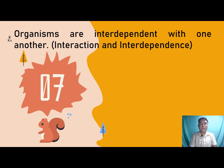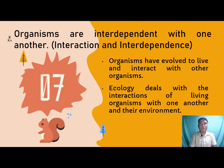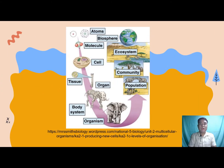The seventh unifying theme is interaction and interdependence — organisms are interdependent with one another. Organisms have evolved to live and interact with other organisms. Ecology deals with interactions of living organisms with one another and their environment. All organisms in an ecosystem depend upon each other; if the population of one organism rises or falls, it can affect the rest of the ecosystem. Biological organization is the hierarchy of complex biological structures and systems extending from atoms to the biosphere.